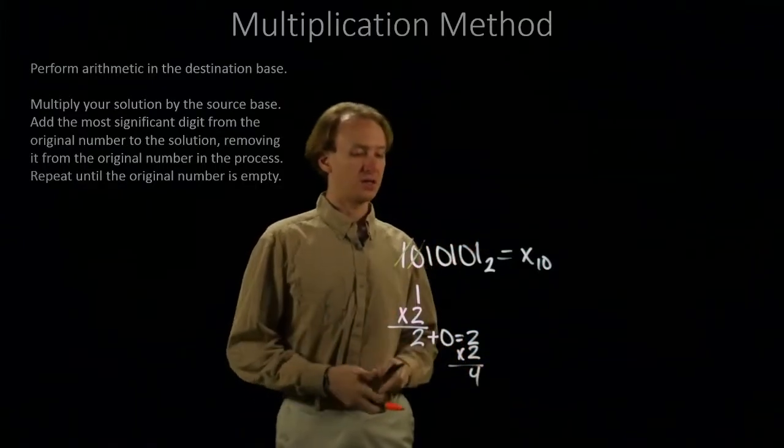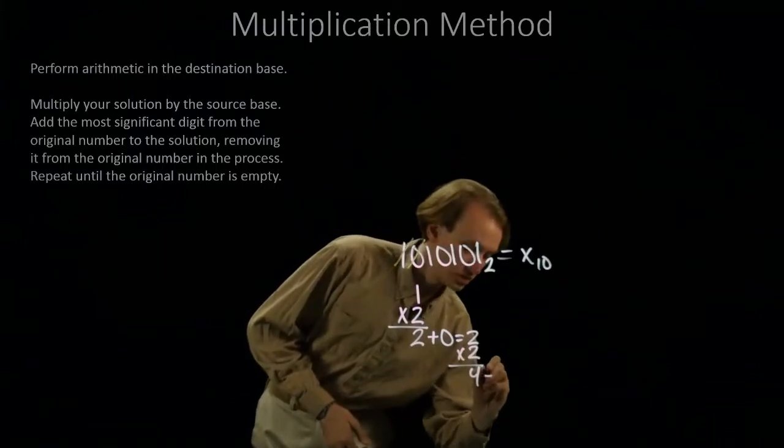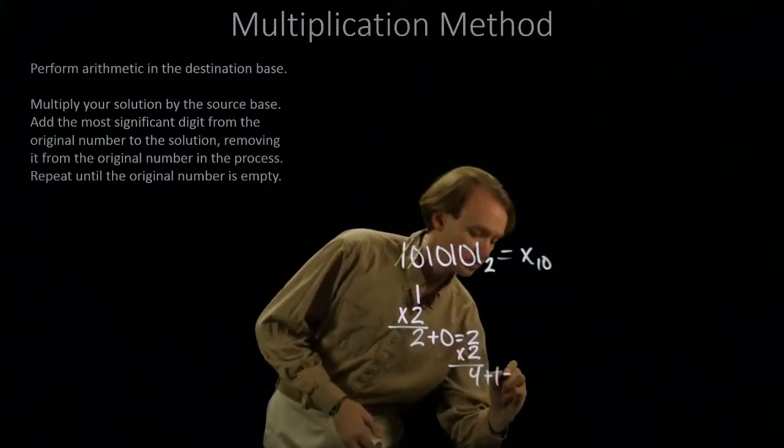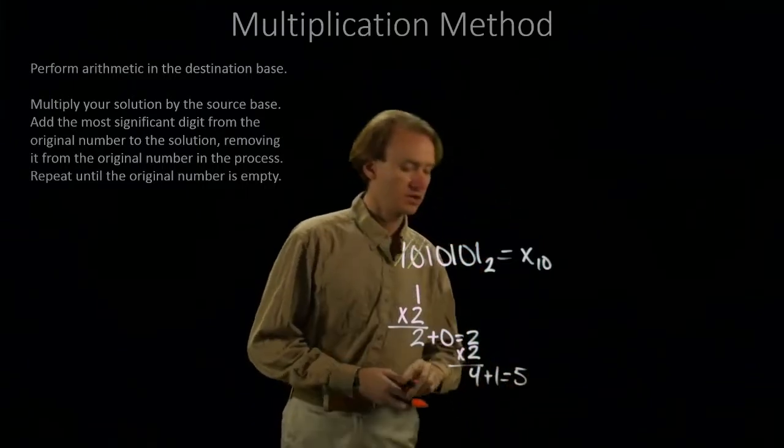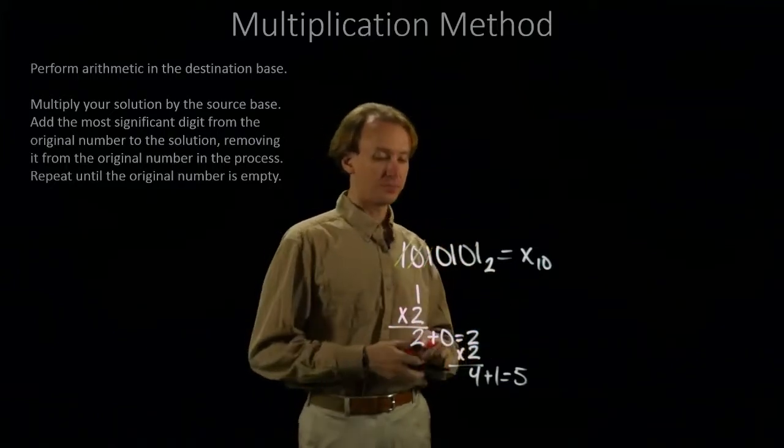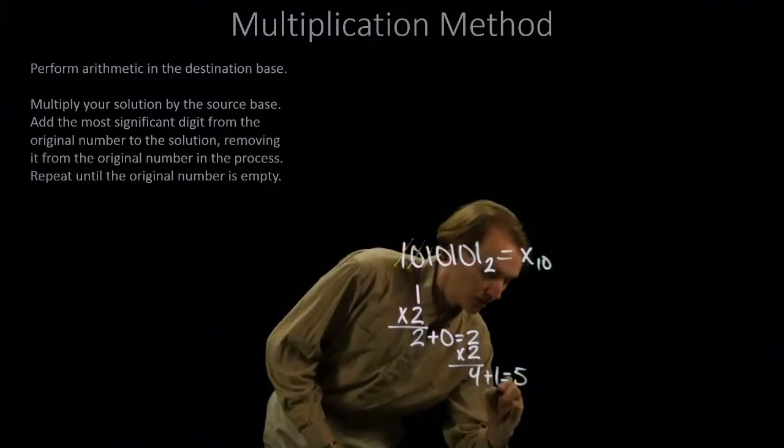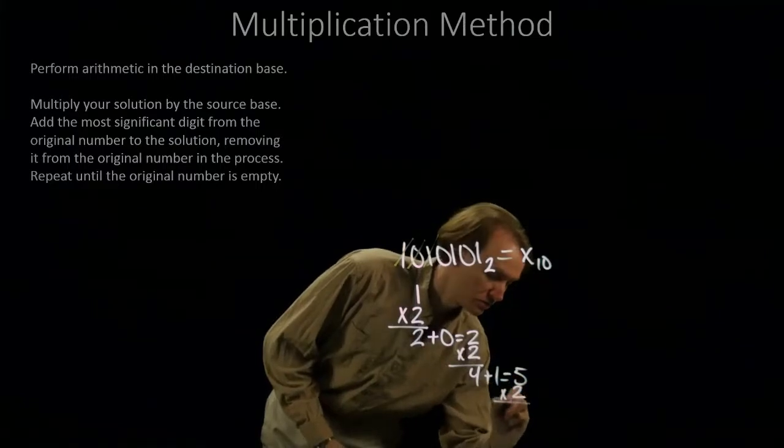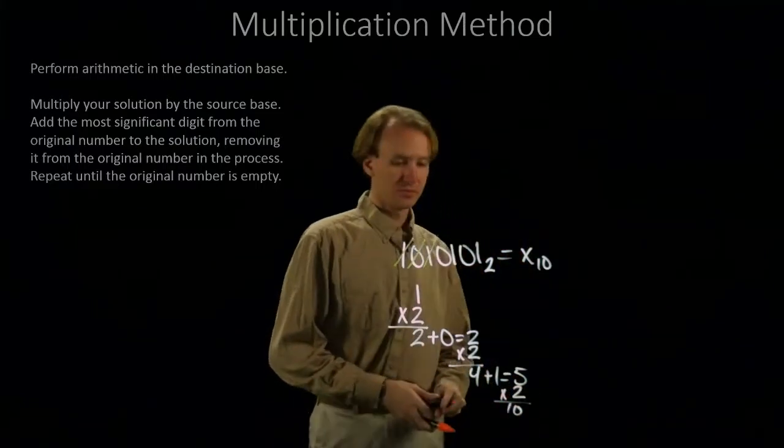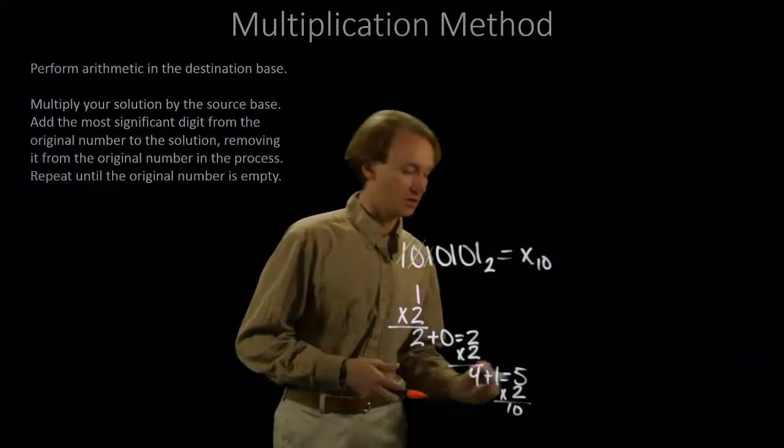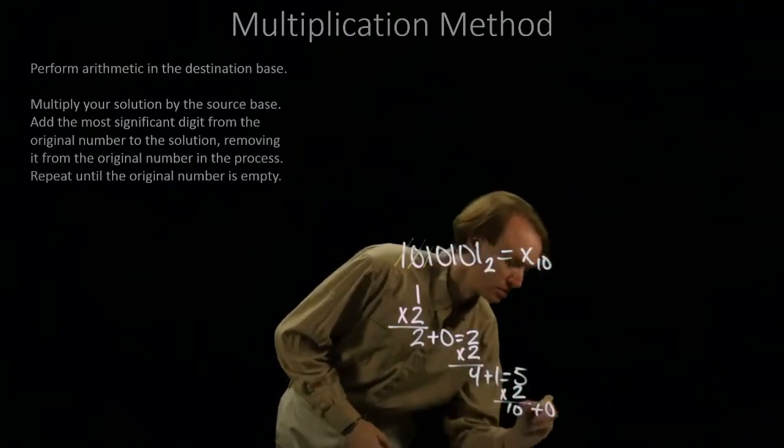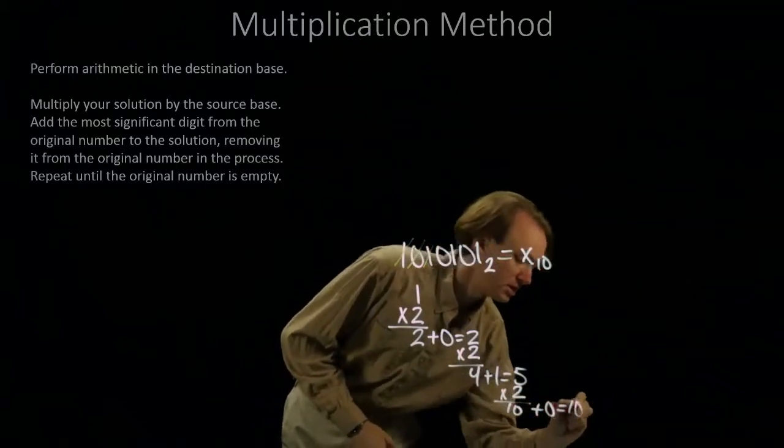Then I'm going to add in the next bit. So, this time I have a 1. It gives me 5. And I'll cross out this one. 5 times 2 gives me 10. And then I add in another bit. This gives me 10 still.